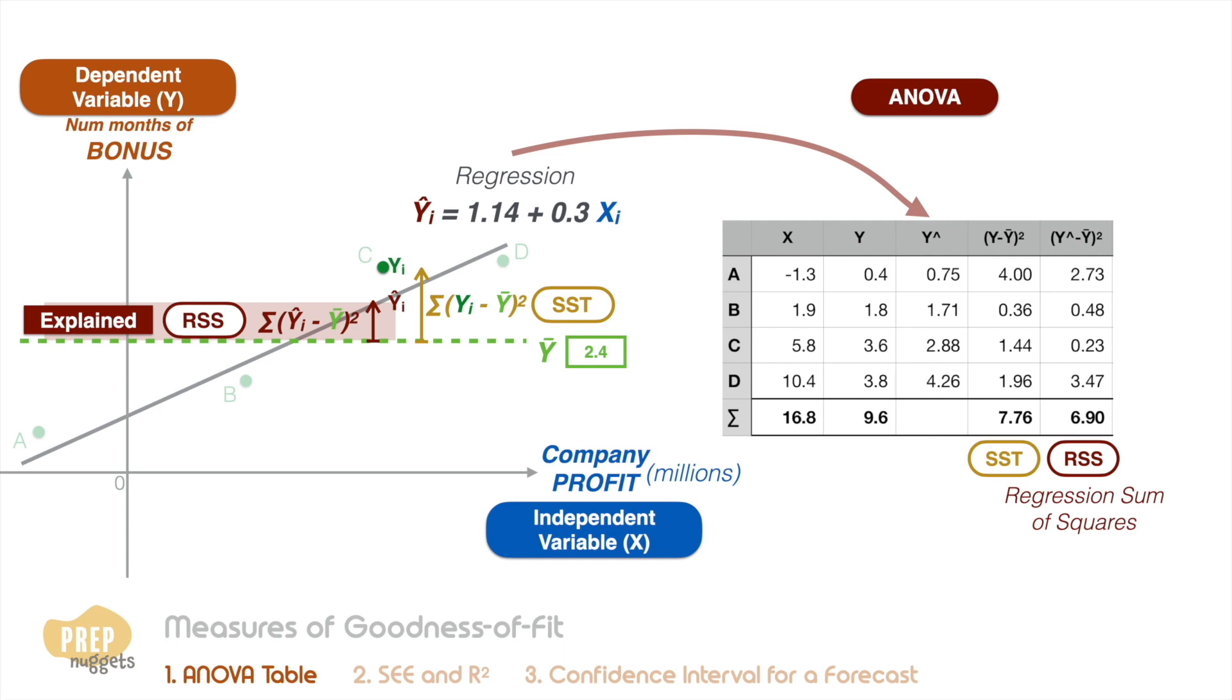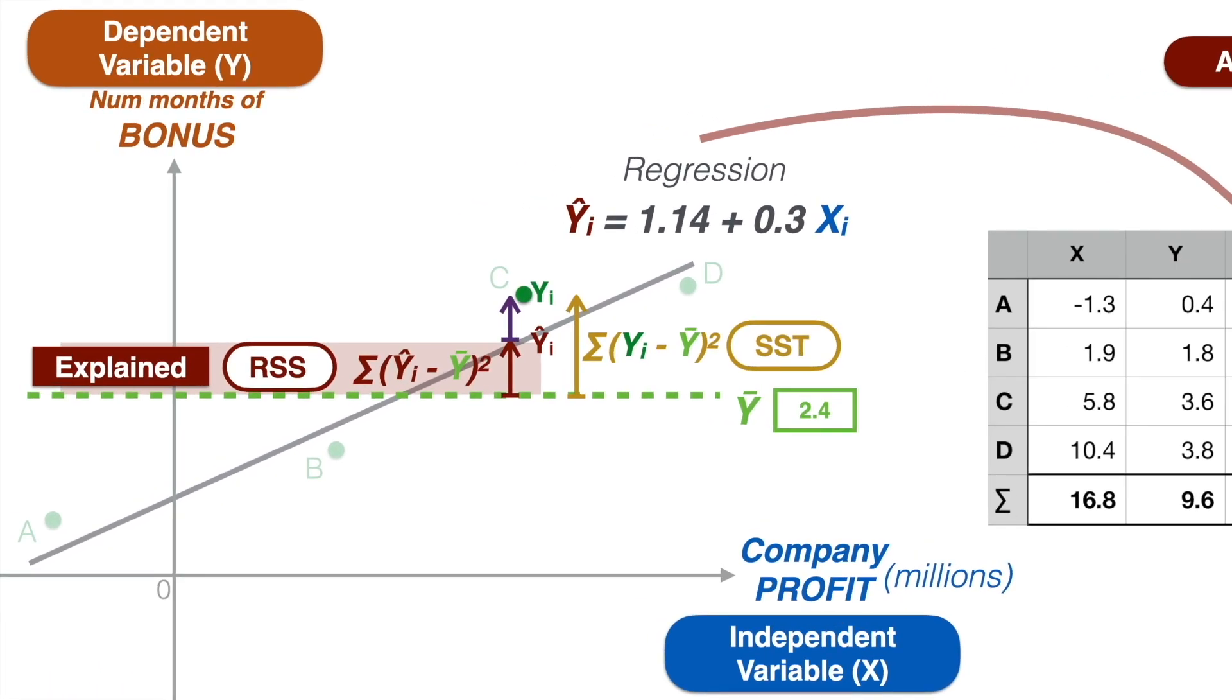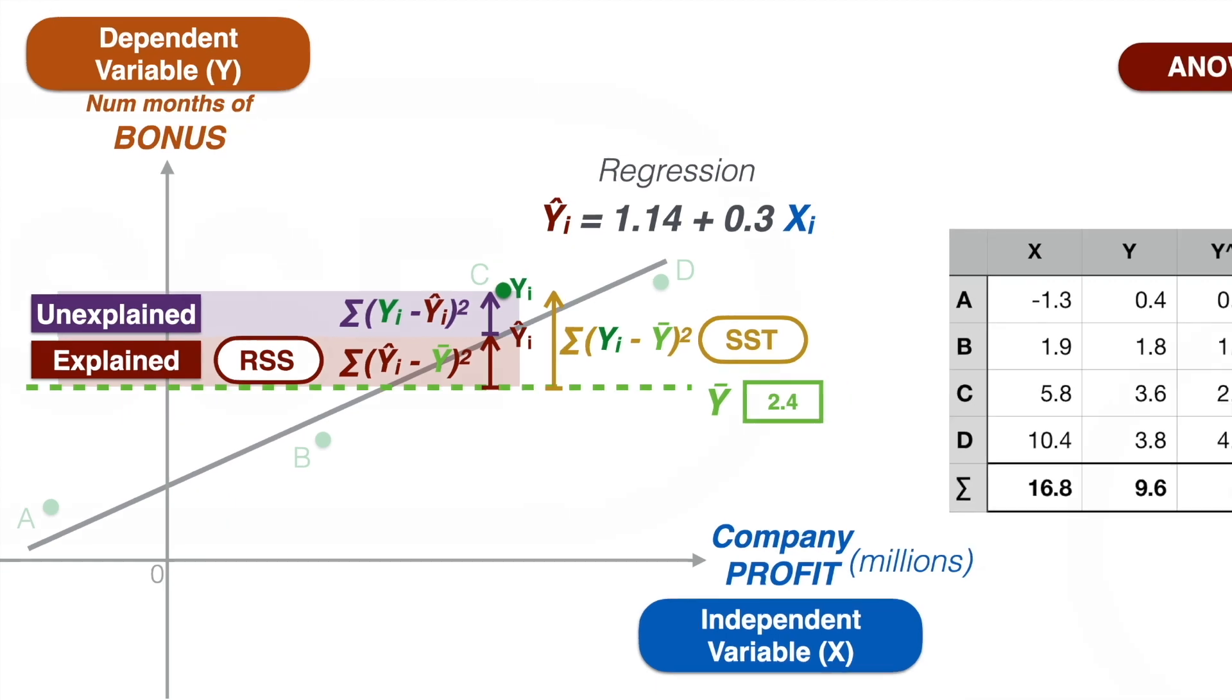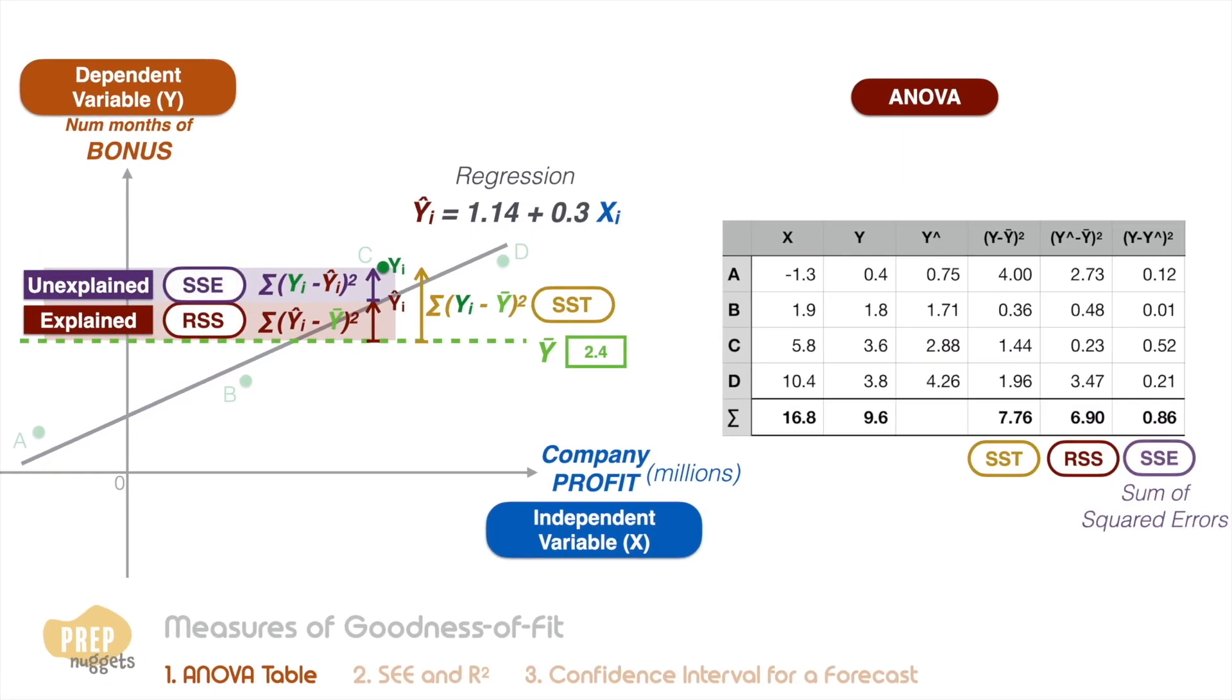However, there is still this variation that's not explained by the model. We can measure the difference between the actual data point and the estimate from our model. Sum them up and that gives us the sum of squared errors, or SSE in short.